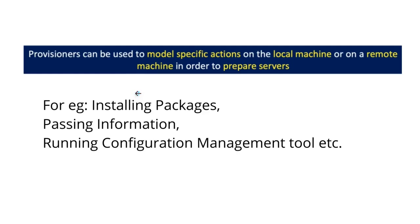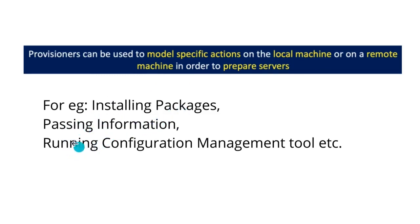For example, an EC2 machine in AWS. Common use cases include installing packages on remote or local machines, passing some information like files or folders, or running any configuration management tool like Ansible or Puppet using Provisioners.